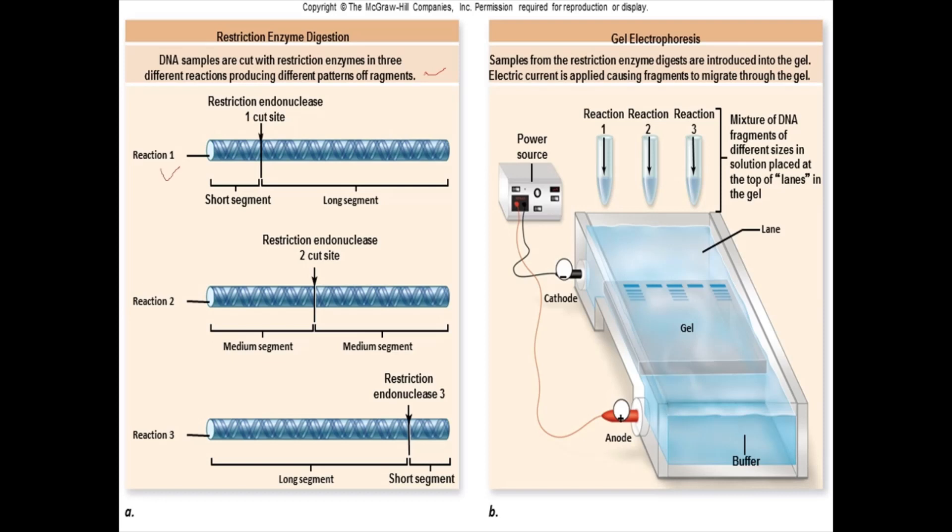For reaction one, the restriction enzyme cut the DNA sample into one short segment and one long segment. For reaction two, the restriction enzyme cut right in the middle, producing two medium-length segments of DNA. For reaction three, the restriction enzyme cut the DNA sample into another long segment and short segment of DNA.